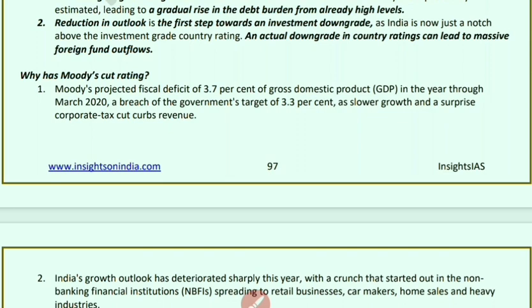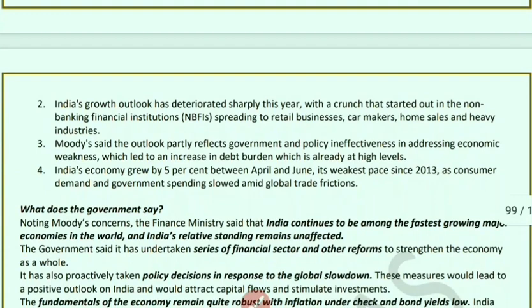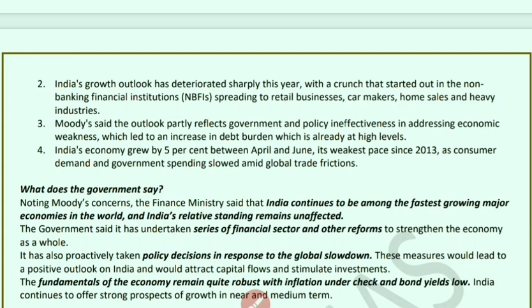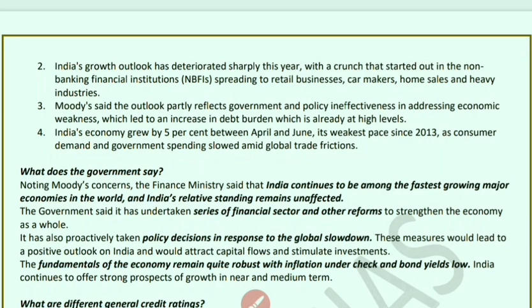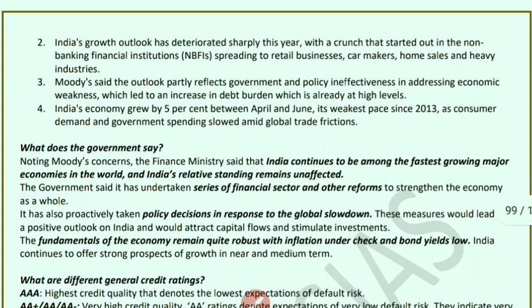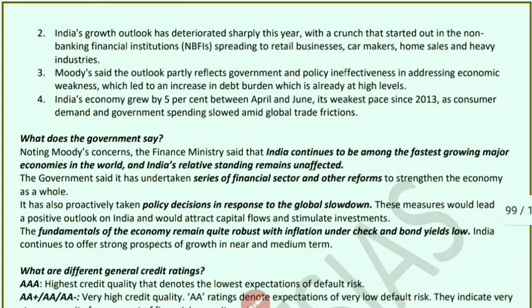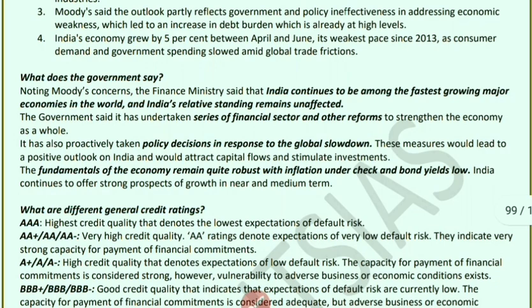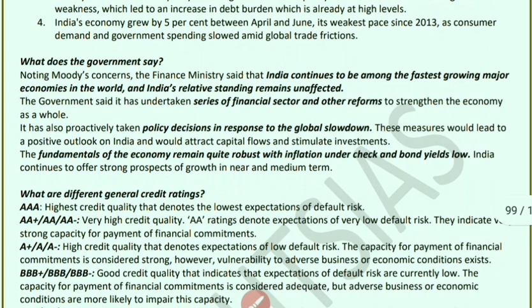Moody's cut its rating because its projected fiscal deficit for India is 3.7% of GDP through March 2020, breaching the government target of 3.3%, due to slower growth and the corporate tax rate cut reducing revenues. India's growth outlook has deteriorated this year, with a crunch in non-banking financial institutions spreading to retail businesses, car makers, home sales, and heavy industries. Moody's stated that the outlook change reflects the ineffectiveness of government and policy in addressing economic weakness, leading to a rising debt burden. The Indian economy grew at only 5% in April-June, the weakest pace since 2013.